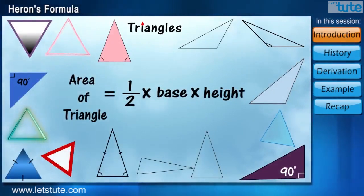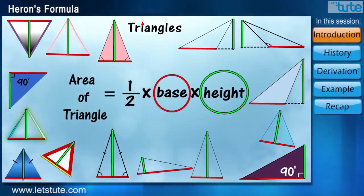Till now, we have been studying that the area of triangles is calculated using the formula half multiplied by base multiplied by height.